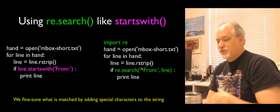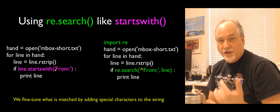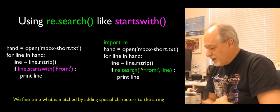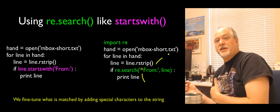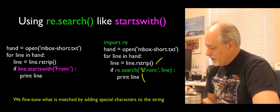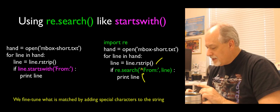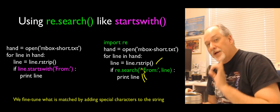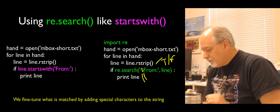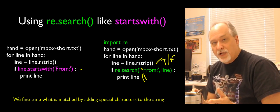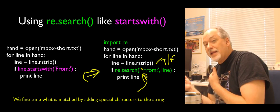If we want the line to start with 'From', we'd use `line.startswith('From')`. We do the same thing with regular expressions by changing the search string. In regex, the caret matches the beginning of the line — it's not actually a caret character. So the two-character sequence `^F` means F in column one, the first character of the line. `^From:` is equivalent to `startswith('From')` — these two are equivalent.